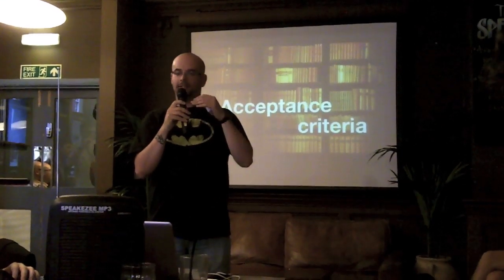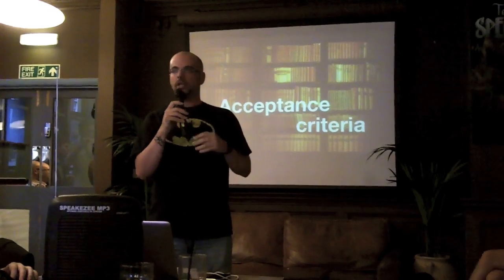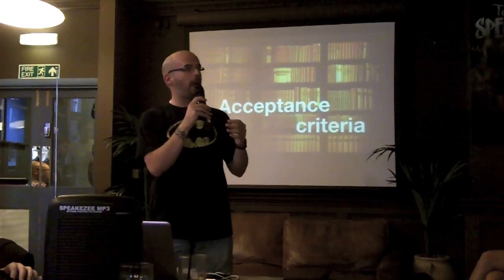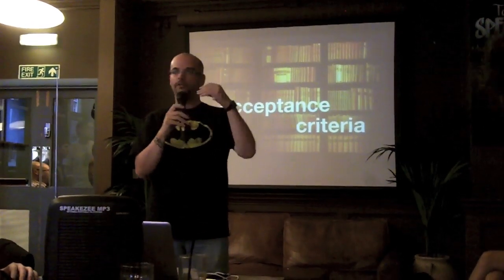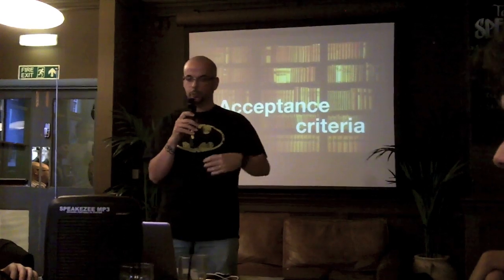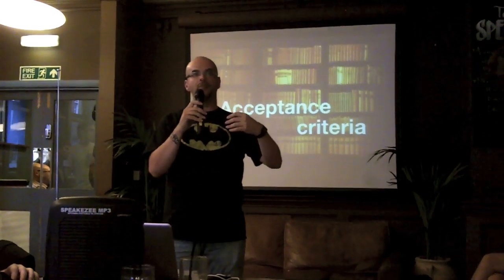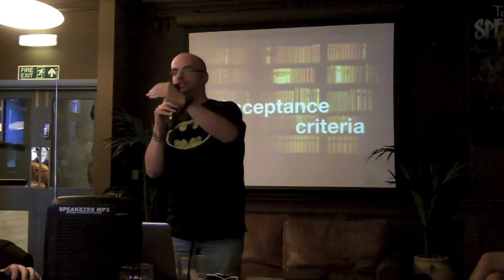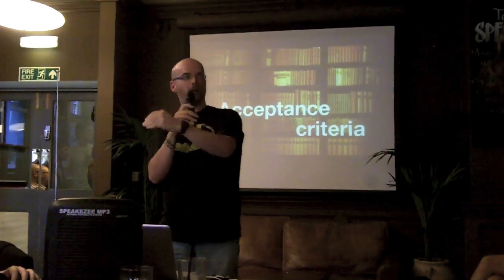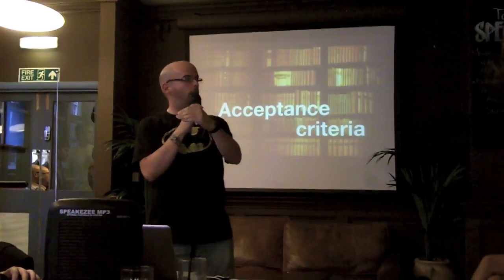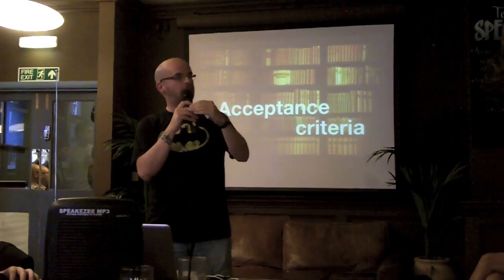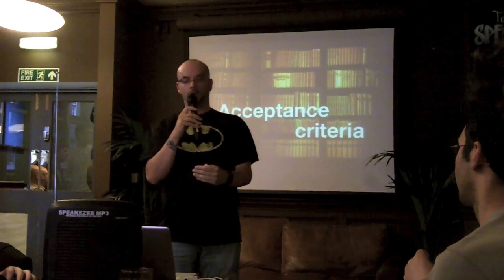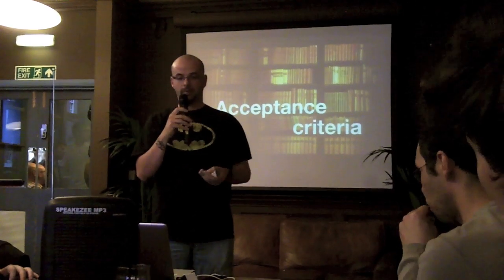The acceptance criteria should be something testable. There's a lot of conversation about how to write it, but it could be in the form of a bunch of questions: 'Can I see my testing procedures? Can I put a pass or fail next to each test item?' Or it might just be a bunch of statements that say the same thing.